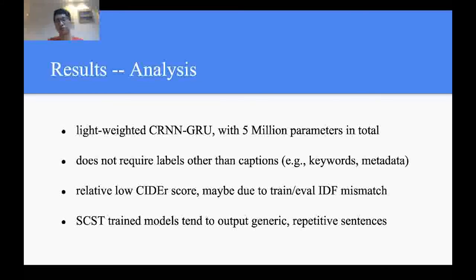Compared with other challenge submissions, our model is quite light-weighted, since the CRNN encoder is a rather small model. For the whole encoder-decoder model, there are only 5 million parameters in total. We do not require any labels other than captions, such as metadata.